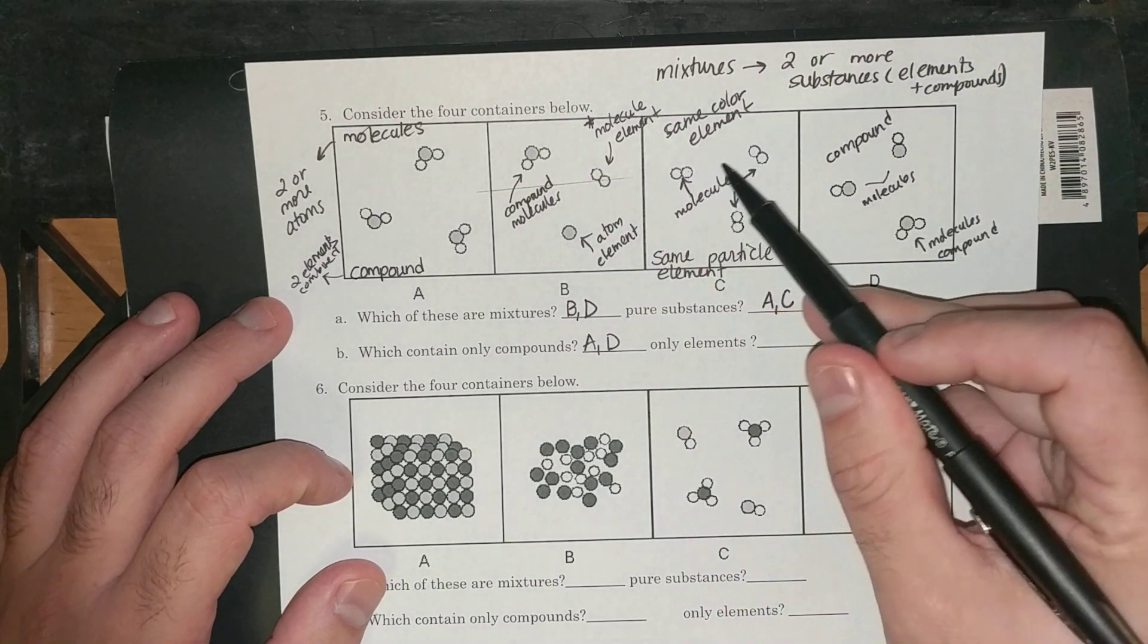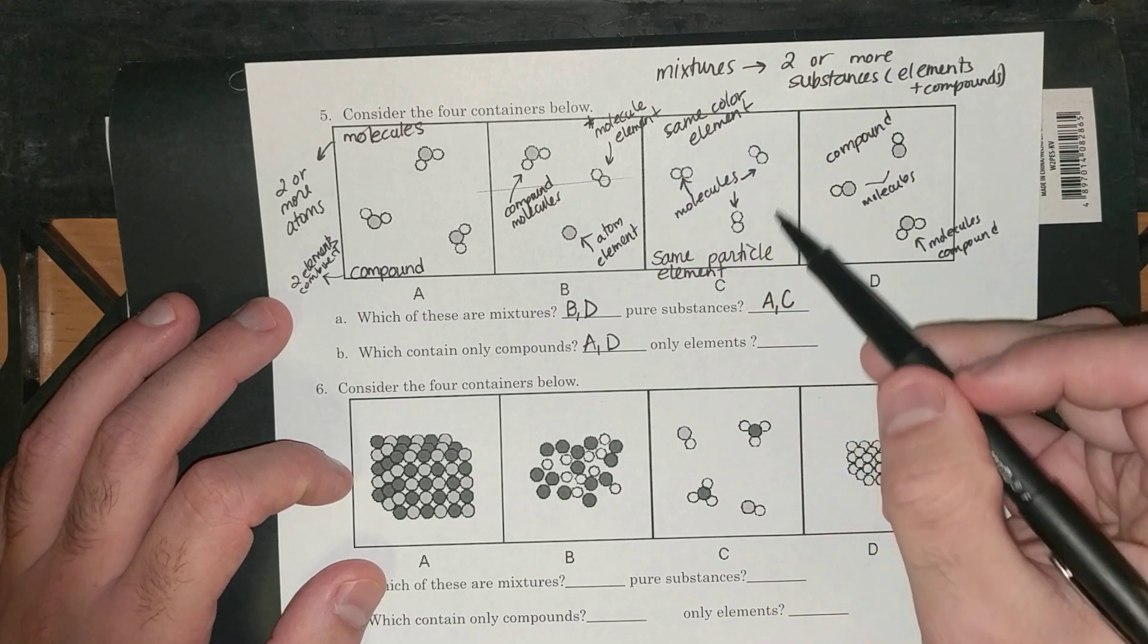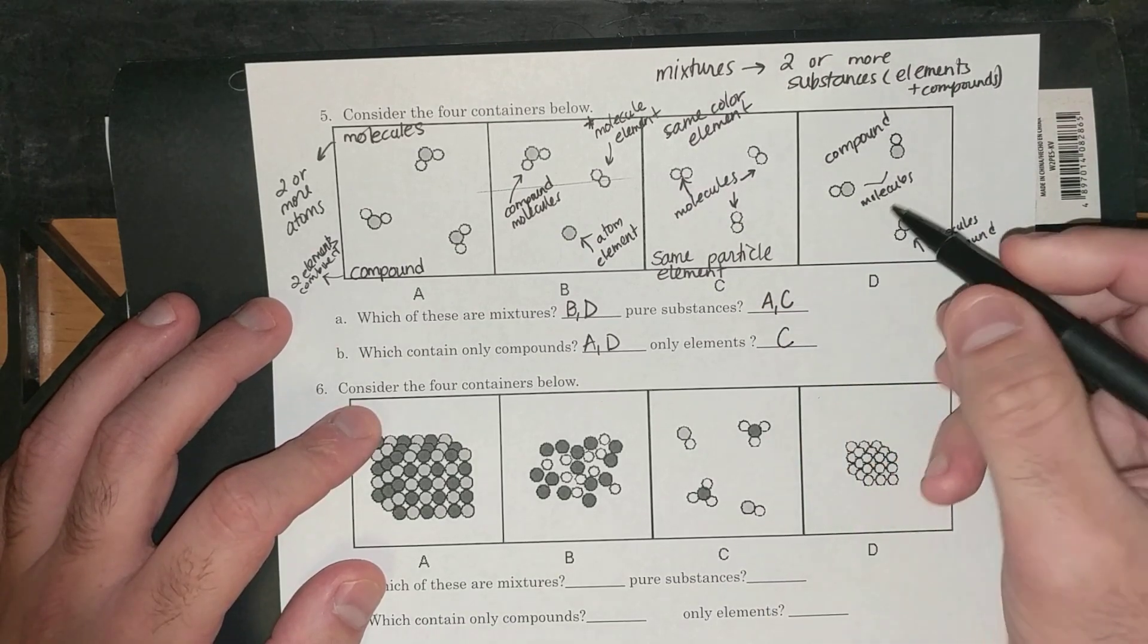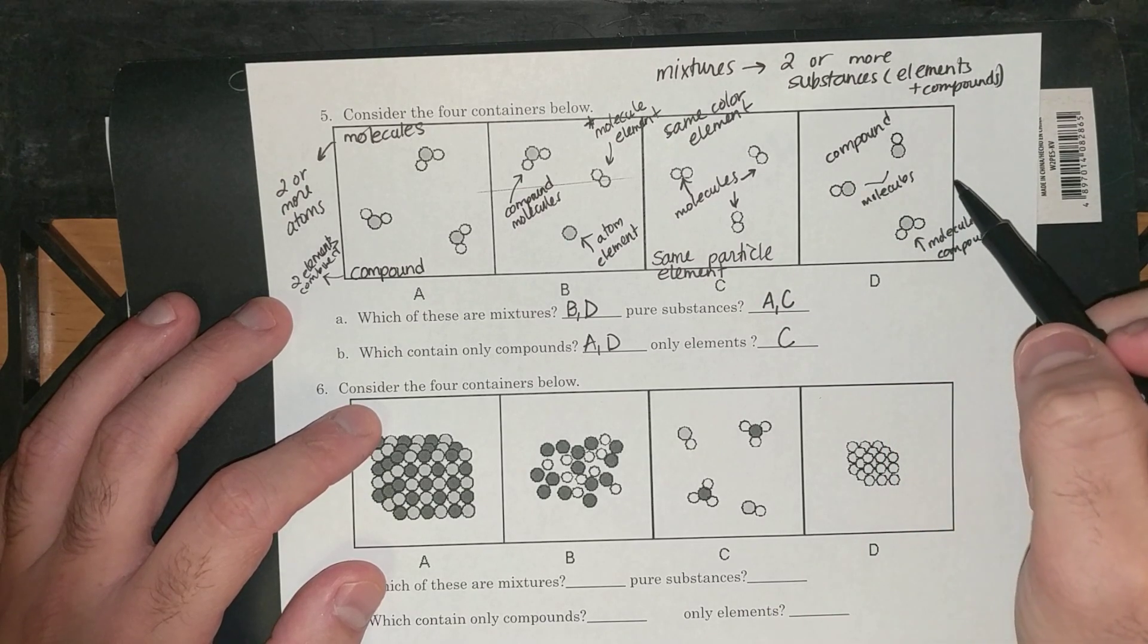And finally, letter C here, these are all the same color. All of these are molecules, but all of these, since they're the same color of the same molecule, this is an element. So C contains only elements. And then D has two compounds mixed here.